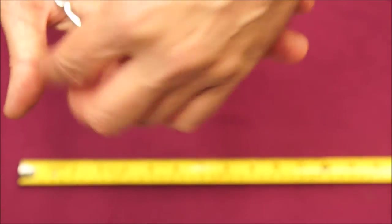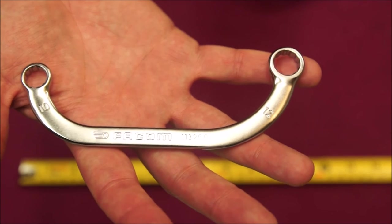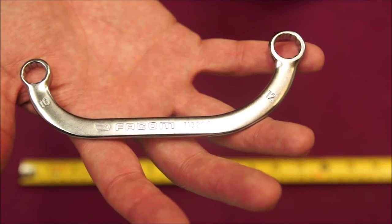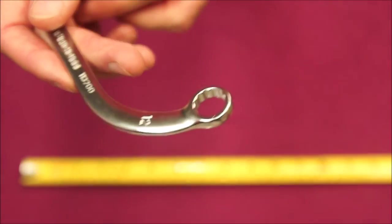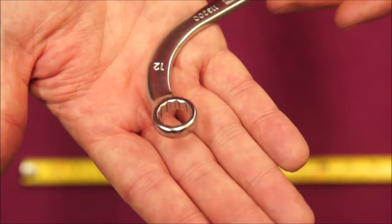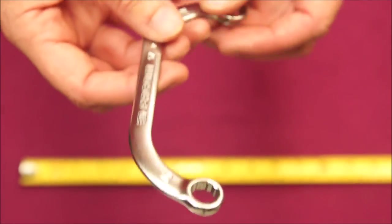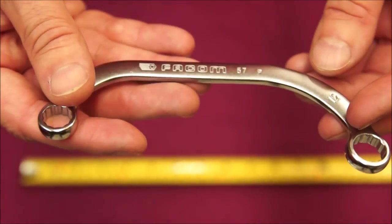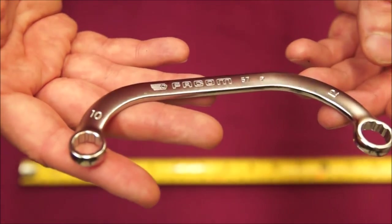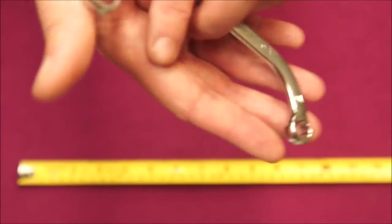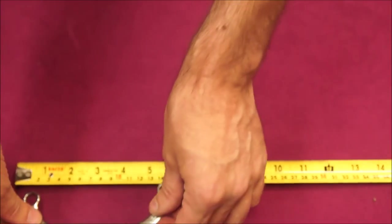Next is a Facom obstruction wrench. These, I'm not sure where they're manufactured. They're not marked anywhere on the wrench and neither was the package. Here's your 12 millimeter side, 12 point. Nice finish on these. Again, this isn't something you have to use often, but when you need an obstruction wrench you need an obstruction wrench.